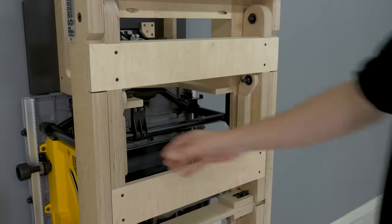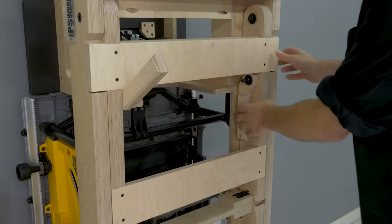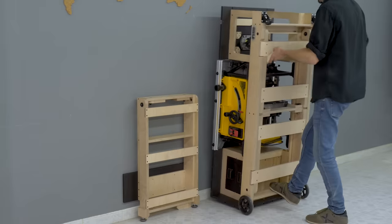The table saw stand barely takes up 48 centimeters from the wall, and the outfit table takes up about 15 centimeters.